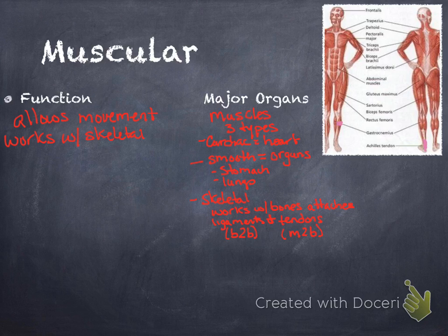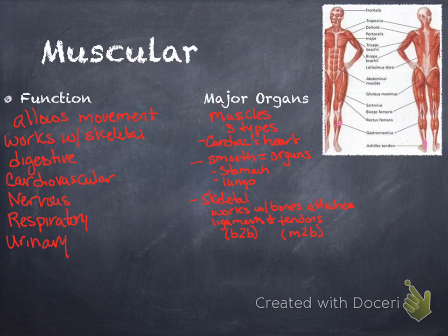All right, so the function: it allows movement. Works with the skeletal system to allow us to move. It also works with the digestive system to help digest food. The muscular system also works with the cardiovascular system because the heart is a muscle. It also works with the nervous system because your brain's got to tell your body to move. When you say, 'I want to lift my arm up and raise my hand,' your brain has to work with your muscles and your bones to make that happen. It works with your respiratory system because your diaphragm is part of the muscle—it's a muscle—and it helps your lungs expand and contract to get air in and out. It also helps with your urinary system because your bladder is also muscle.